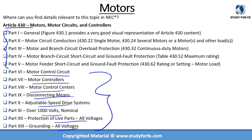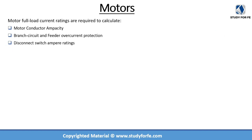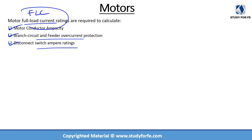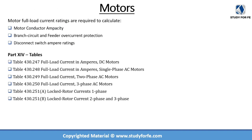The first five parts are very important because they are focused on motors. As mentioned earlier, motor FLC shows up again and again because the code requires us to use FLC for motor conductor ampacity, conductor sizing, branch circuit and feeder circuit overcurrent protection, overload protection, disconnect switch ampere ratings, and so on. So the question is: where do you get this data? Where do you find the motor full load current? So far we've discussed the first five parts of Article 430 in relative detail.